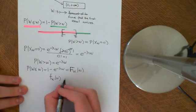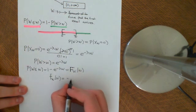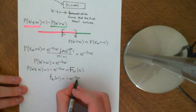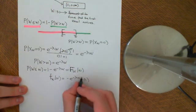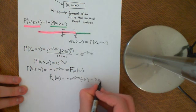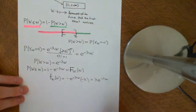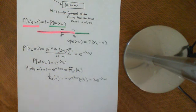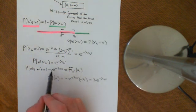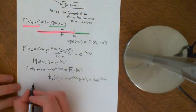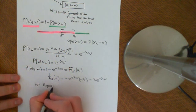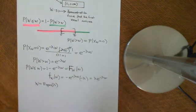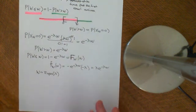So the PDF is λe to the negative λw. That is the PDF of the exponential distribution, and one minus e to the negative λw is the CDF of the exponential distribution. So W is exponentially distributed with parameter λ. And that's the relation between the Poisson and the exponential distribution.